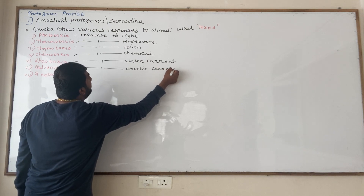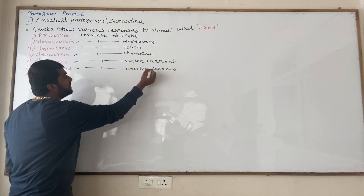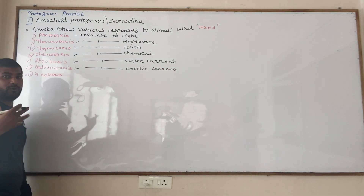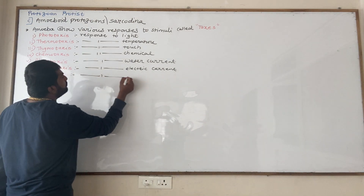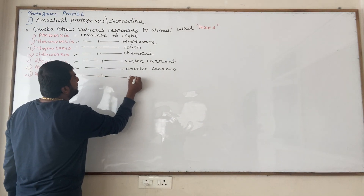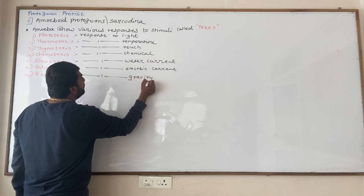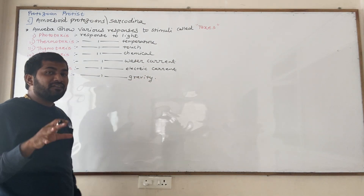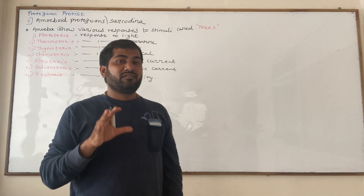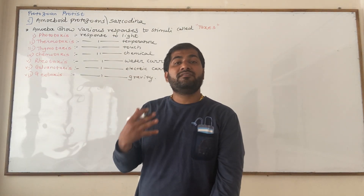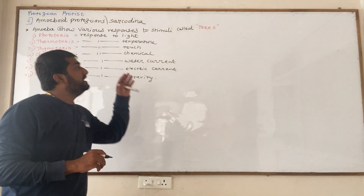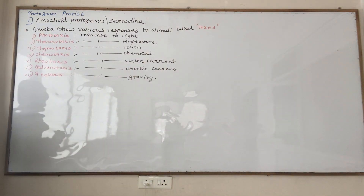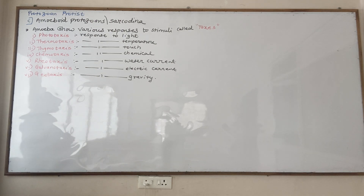Galvanotaxis is response to electric current. Amoeba can get rid of situations where electric current or potential difference is high — this is called negative taxes. So though Amoeba does not have a complex nervous system like mammals, it has the ability to show responses to temperature, touch, chemical substances, water current, electric current, and gravity.